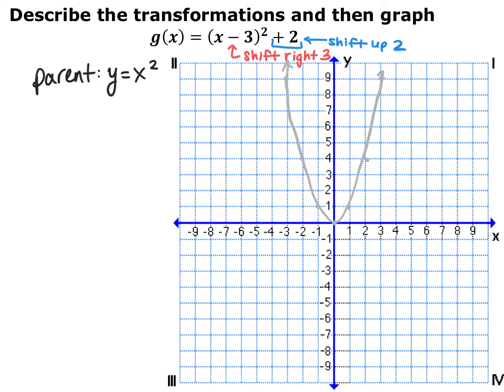Doing this graphically, I take each point and shift right three and up two. The point at (0, 0) shifts to (3, 2). The point at (1, 1) moves to (4, 3). The point at (2, 4) moves to (5, 6). On the other side, the point at (−1, 1) moves to (2, 3), and the point at (−2, 4) moves to (1, 6). Then I just connect the dots and this is my transformed graph.